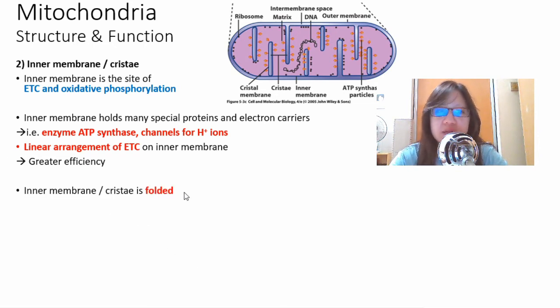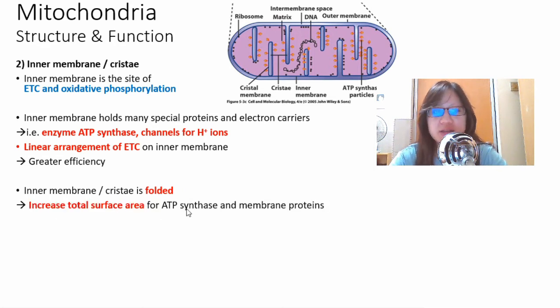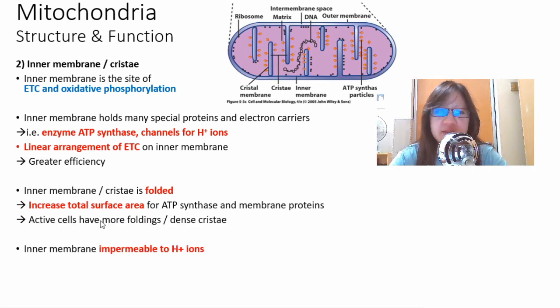We know that the inner membrane is folded. Why is it folded? Because this increases the total surface area for ATP synthase and membrane proteins. Active cells would have more foldings and dense cristae in order to produce even more ATP.